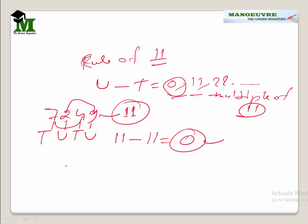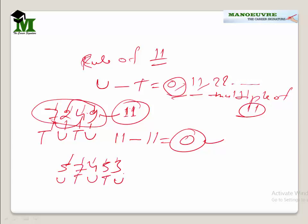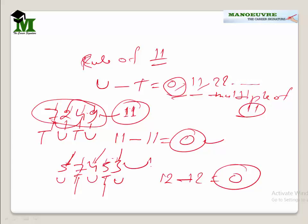Suppose the number is 57453, which has 5 digits. Label alternating positions: u, t, u, t, u — so u digits are 3, 4, 5 and t digits are 5, 7. Sum of u: 3 plus 4 is 7, plus 5 is 12. Sum of t: 5 plus 7 is 12. Difference is 12 minus 12 equals 0, which is a multiple of 11, so 57453 is divisible by 11.